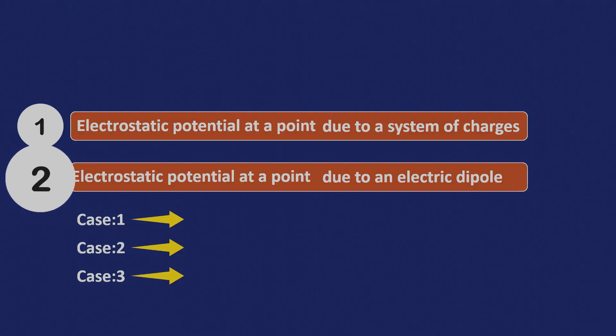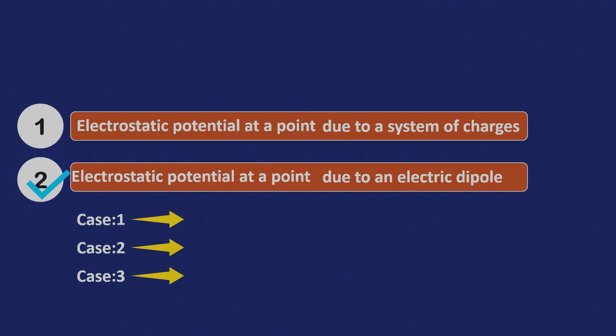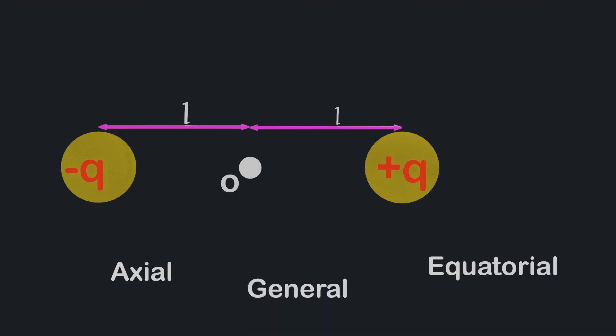Now let's discuss the electric potential due to an electric dipole. A dipole is formed by two charges with equal magnitudes but opposite polarities, positioned at a fixed distance L from the center O of the dipole. Just as we derived the equation for the electric field of a dipole in its axial, equatorial, and general positions, we will now derive the equation for electric potential in those same positions. Let's begin with the axial position.